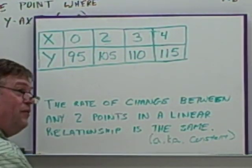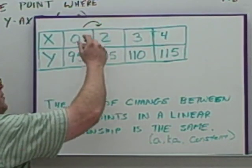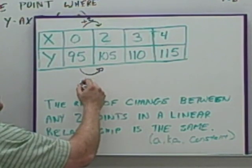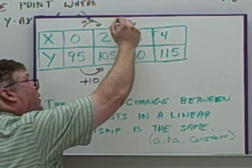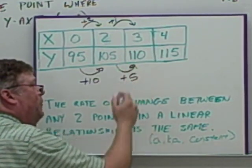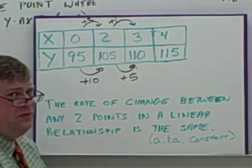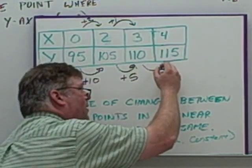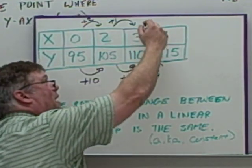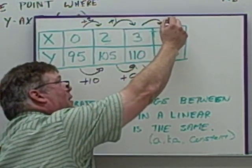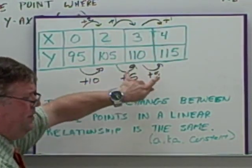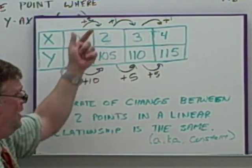So let's calculate the rate of change for this table. Going from here to here, we have a plus two. From here to here, we have a plus ten. From here to here, we have a plus one. And from here to here, we have a plus five. It doesn't look the same. Let's see what happens if we keep going. Here to here, we have a plus five. From three to four, we go up one.